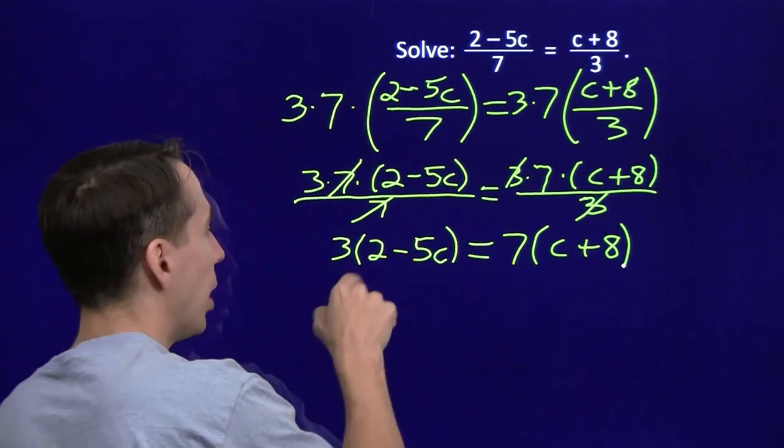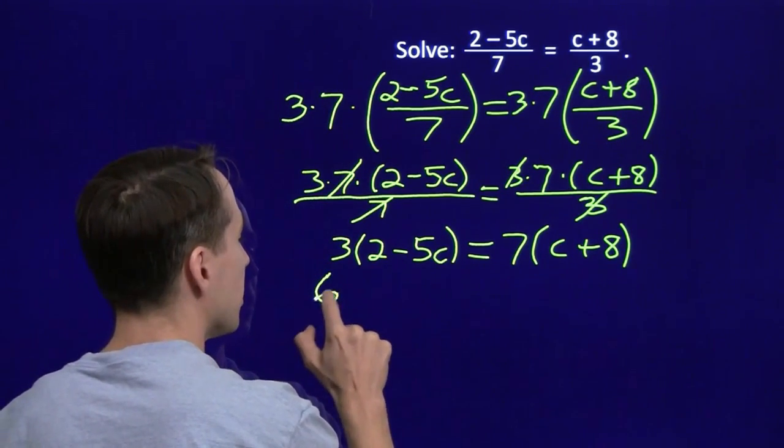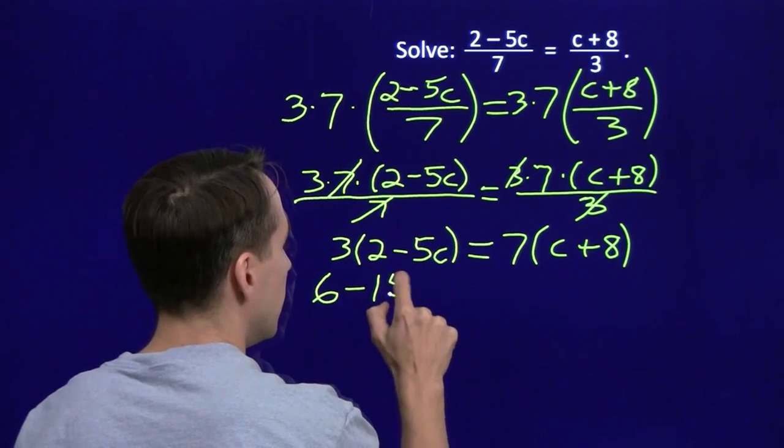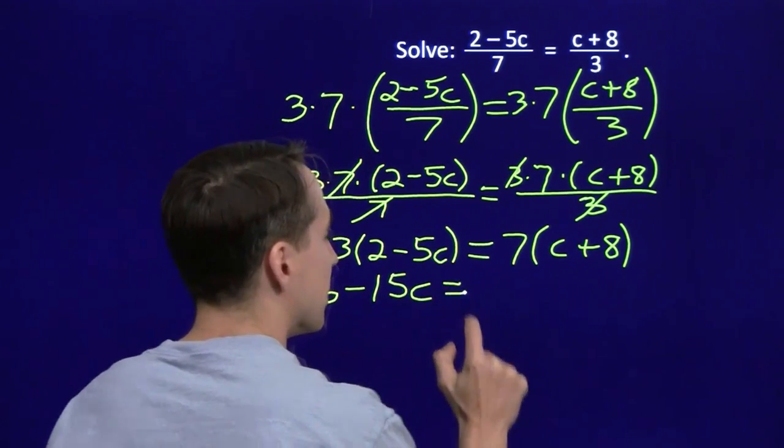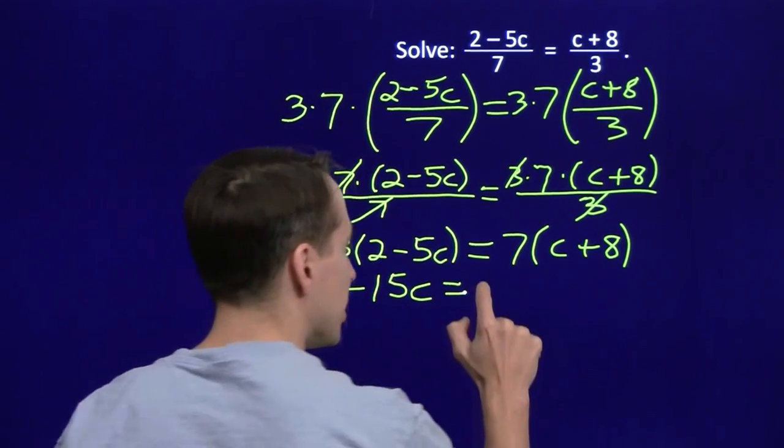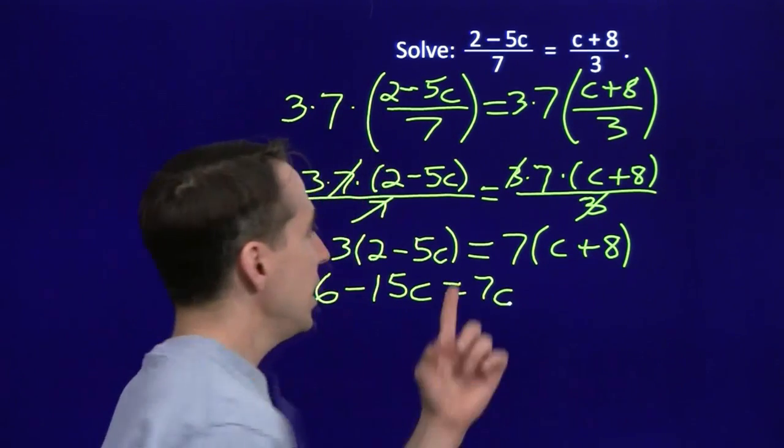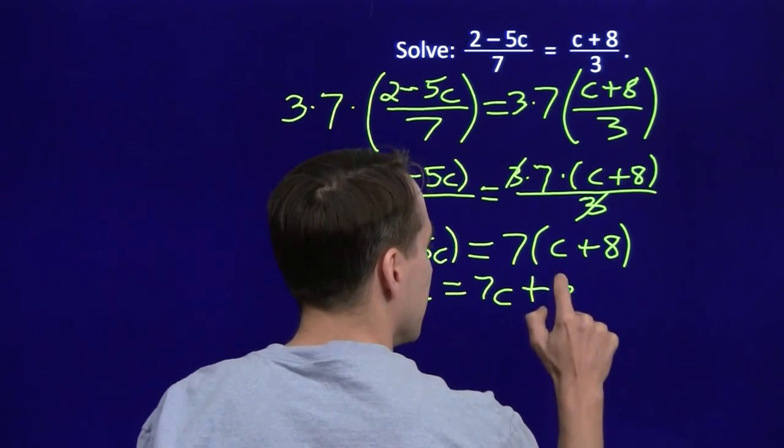Now we know how to handle this. We start with the distributive property. 3 times 2 is 6. 3 times minus 5c is negative 15c. Then over here, 7 times c, that's 7c. 7 times 8, that's 56.